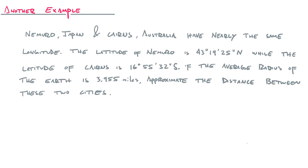The latitude of Nemuro is 43 degrees, 19 minutes, 25 seconds north of the equator, while the latitude of Cairns is 16 degrees, 55 minutes, 32 seconds south of the equator. If the average radius of the earth is 3,955 miles, which it's not, but it's pretty close, approximate the distance between these two cities.